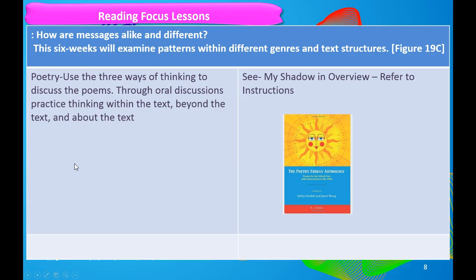You're also going to use poetry. Use the 3 kinds of thinking to discuss poems — talk about how the poem fits within all three types of thinking. In the overview, you have a poem called My Shadow. Refer to the instructions in the overview, and once again you have the Poetry Friday Anthology in your library, which has about 26 kindergarten poems for you to use in your reading focus lessons.